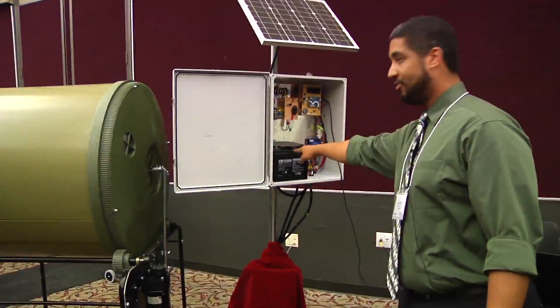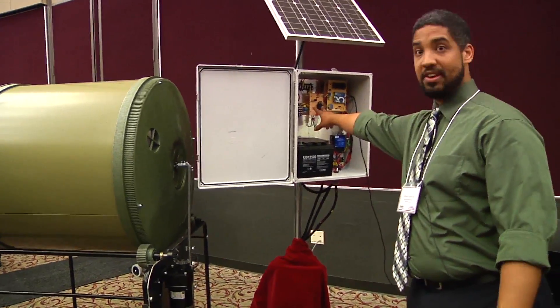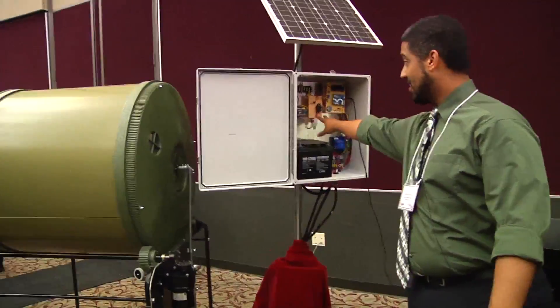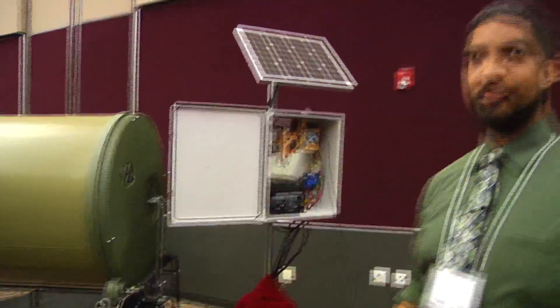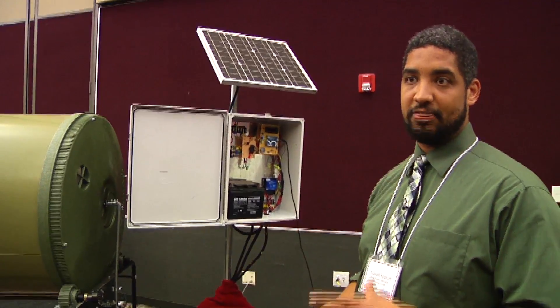It charges through a charge controller to a battery that will provide power to the entire system, including the Arduino board and the motor drive circuit and the alarm circuit, and makes the entire thing self-sufficient. It can run for six days without any sunlight whatsoever before it would need to recharge.